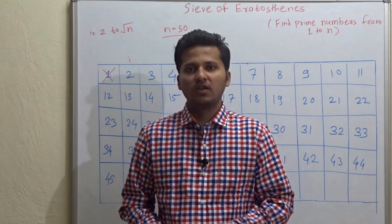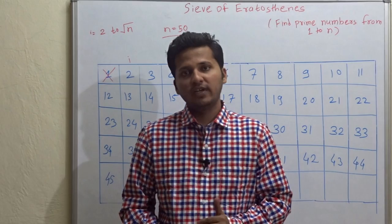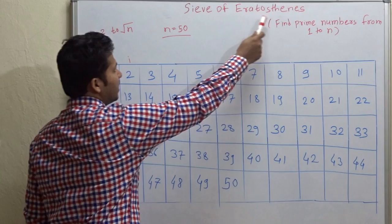If you are asked to find out prime numbers between 1 to n, then we need an efficient algorithm for finding out prime numbers from 1 to n. One of such efficient algorithms is Sieve of Eratosthenes.